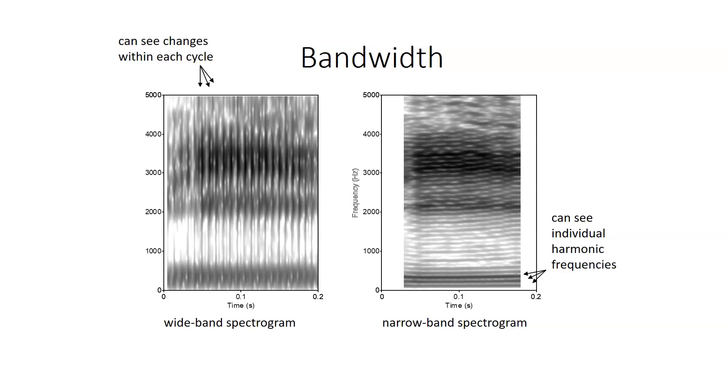So if you try to do a spectrogram of your own speech, for example, if you see what looks like horizontal striping in the speech, you may want to adjust the bandwidth to get something that looks more like the spectrograms that I show you in class.